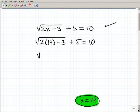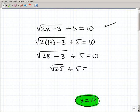Now, let's just do the work. 2 times 14 is 28. 28 minus 3 plus 5. Does this all balance out? So that 28 minus 3 is the square root of 25 plus 5. Does that equal to 10? Square root of 25 is 5. 5 plus 5. Does that equal to 10? Yes. 10 equals 10. That's a true statement.